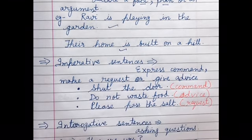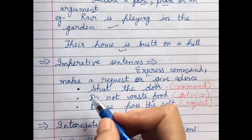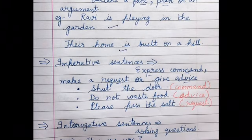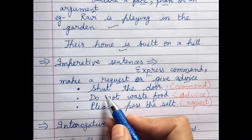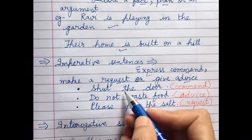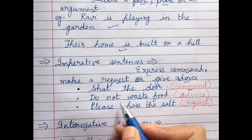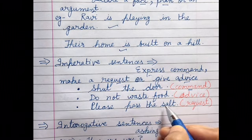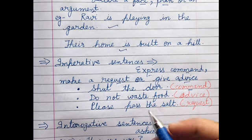The second type is imperative sentences. Imperative sentences express a command, a request, or advice. For example: 'Shut the door' — that is a command. 'Do not waste food' — that is an advice. 'Please pass the salt' — that is a request. So in imperative sentences, we are commanding, advising, or requesting someone to do something.